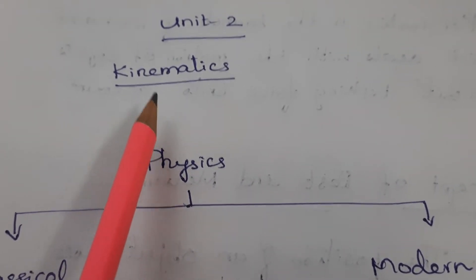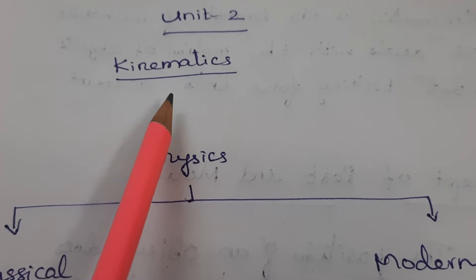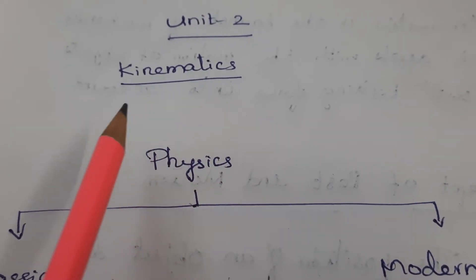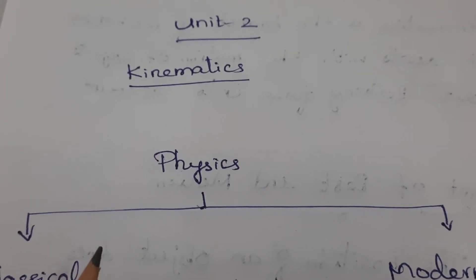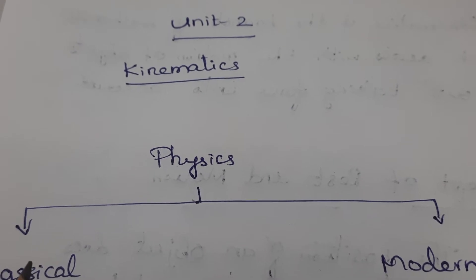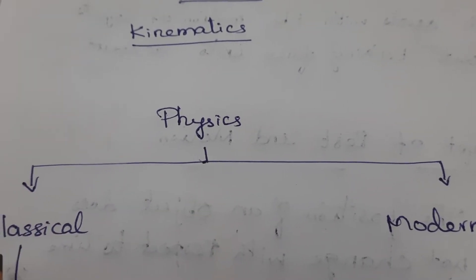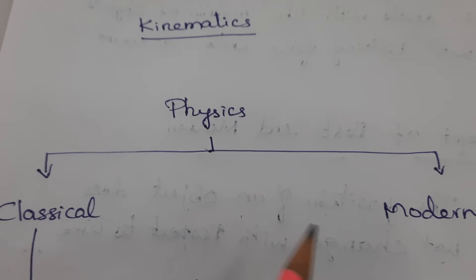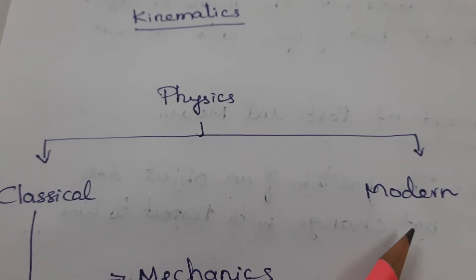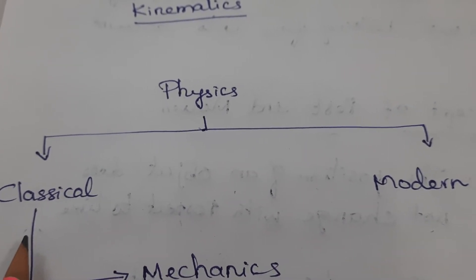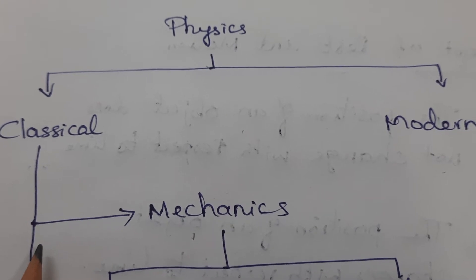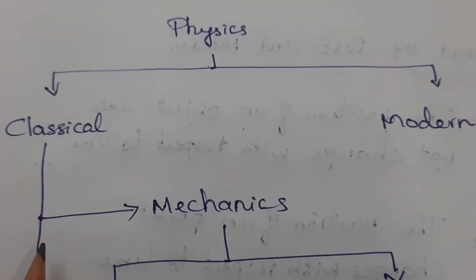This is the most important unit in physics. In the first lesson, you have learned branches of physics. The main branches are classical physics and modern physics. Classical physics has mechanics, thermodynamics, optics, etc.